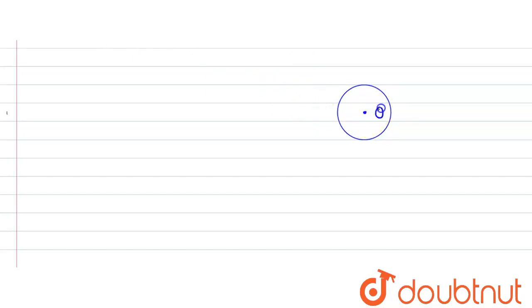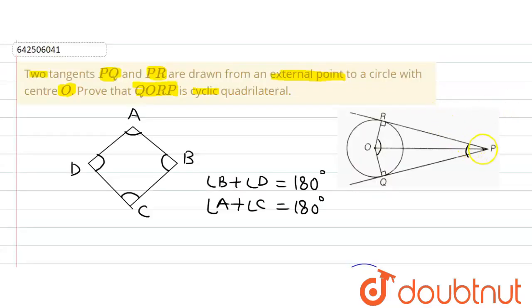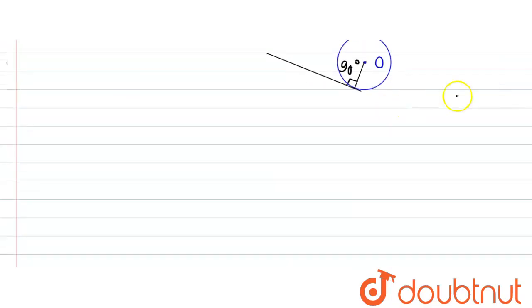We know that when any tangent is drawn to a circle, the tangent makes an angle of 90° with the radius of the circle. So this angle will always be 90°. Therefore, since OR is the radius of the circle, tangent PR will be perpendicular to OR.